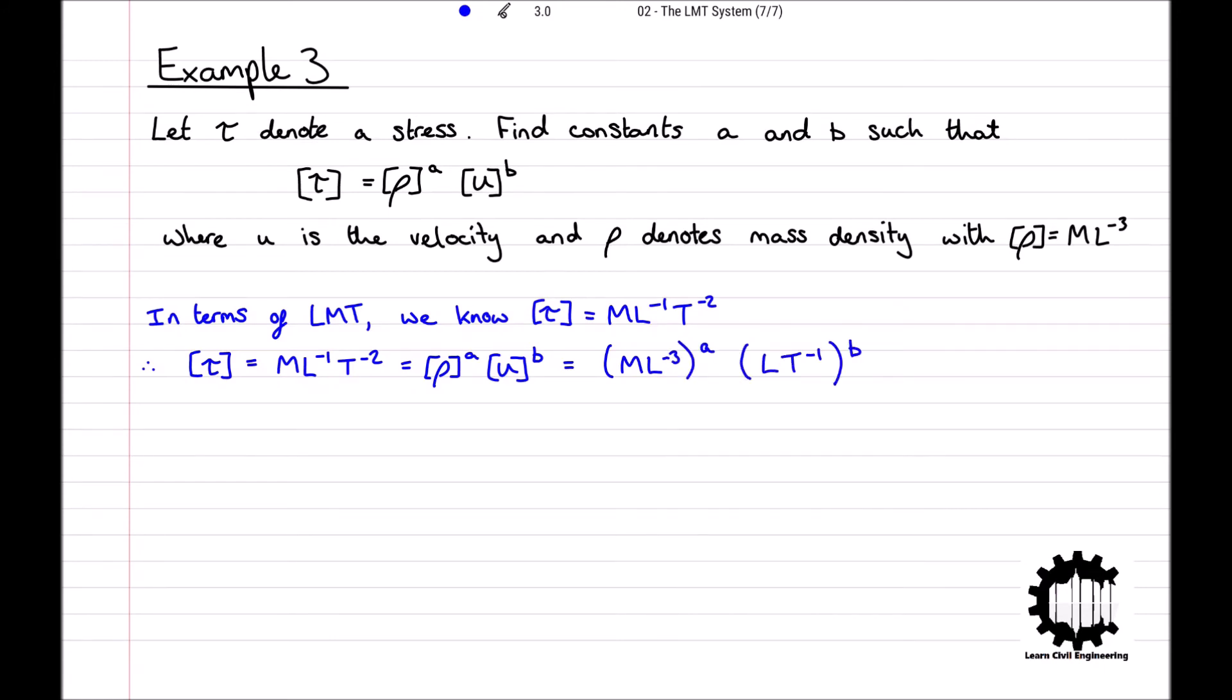We get the equation M times by L to the power of minus 1 times by T to the power of minus 2 is equal to M to the power of A times by L to the power of minus 3A plus B times by T to the power of minus B.